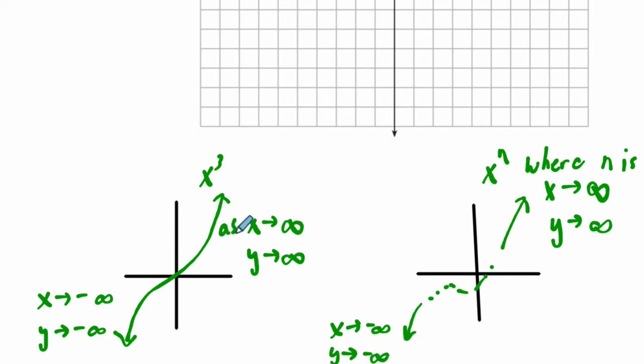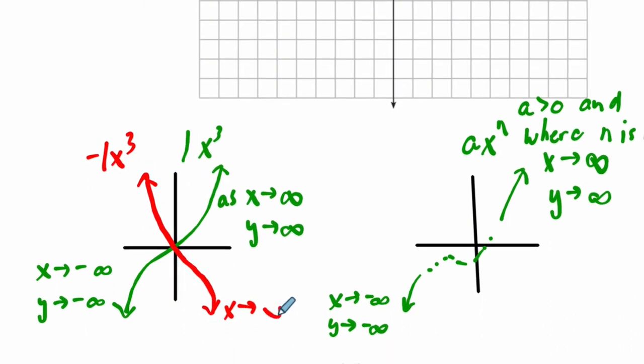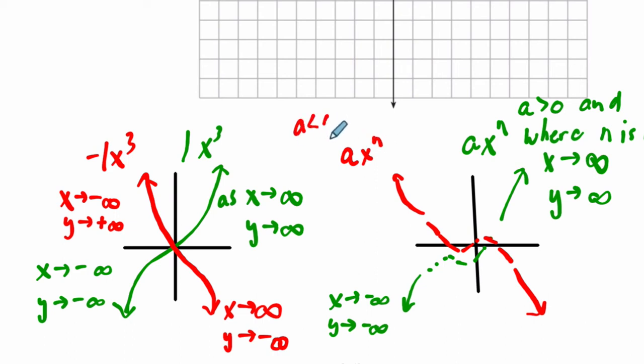And it's true for any odd leading, any polynomial with an odd leading term. That as x approaches infinity, y approaches infinity. So this is for x to the n, where n is odd, and where a is greater than zero. But what happens if a is less than zero, if it's a negative coefficient? Well, that's going to reflect it over the x-axis. So let's say you have negative one x cubed. What's happening here is as x approaches positive infinity, y approaches negative infinity. And as x approaches negative infinity, y approaches positive infinity. And this is true for any polynomial with a leading odd coefficient of odd power. Any polynomial with a leading term with an odd degree, and where a is negative. So a times x to the n, where a is less than zero, and where n is odd.